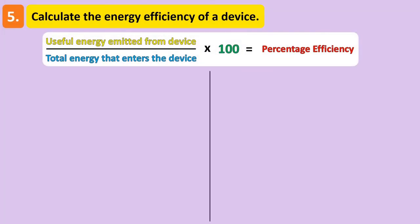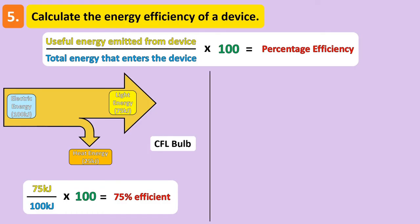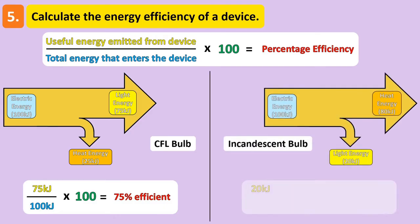We can calculate the energy efficiency of these two bulbs using this formula, which you need to know for your exams: divide the useful energy emitted by the total amount of energy that entered the device, then multiply by 100 to get the percentage efficiency. For the CFL bulb, 75 kJ divided by 100 kJ, multiplied by 100, gives 75% efficiency. The incandescent bulb emits 20 kJ of light energy, so 20 divided by 100, multiplied by 100, gives only 20% efficiency. Make sure you know how to do these calculations for your exams.